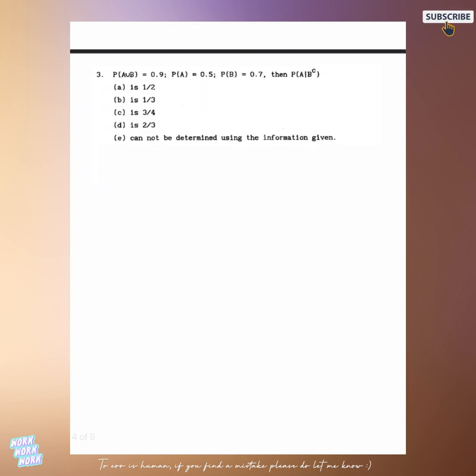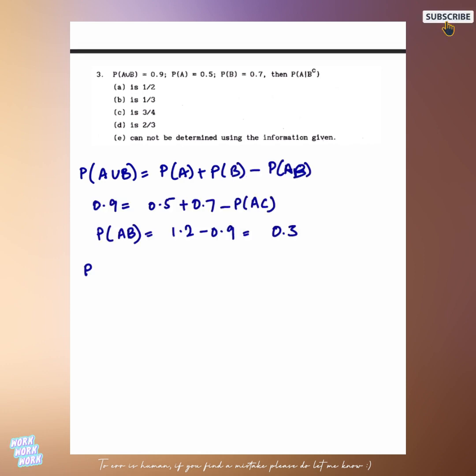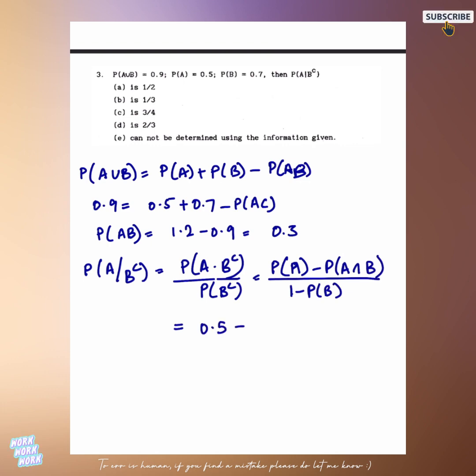Next question, probability A union B is equal to 0.9, probability that at least A or B occurs is equal to 0.9, and we have to find probability A given B complement. Probability A given B complement is equal to probability A intersection B complement upon probability B complement, which is equal to probability A minus probability A intersection B. We already have the values. Hence the required answer is 2 by 3.